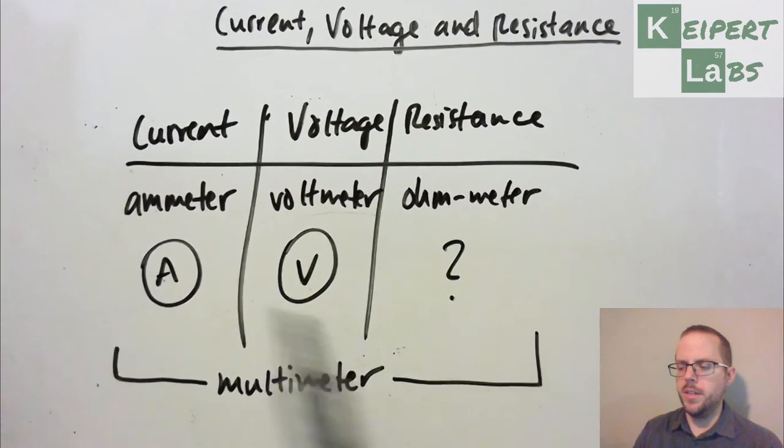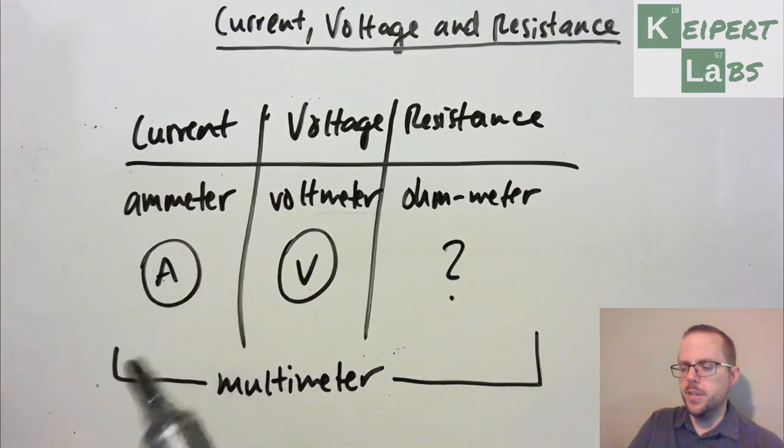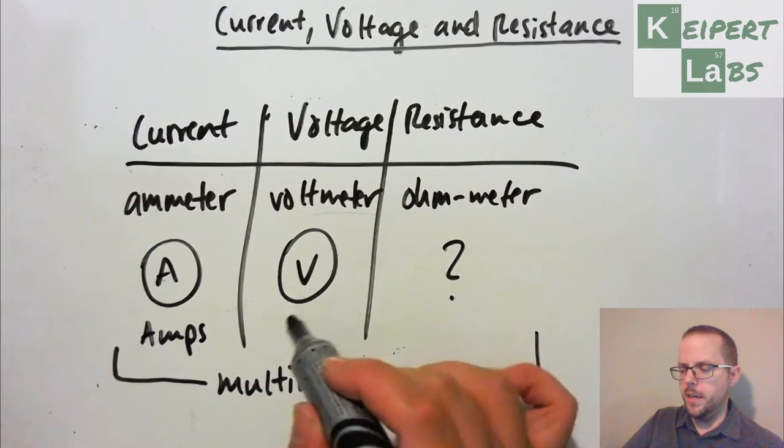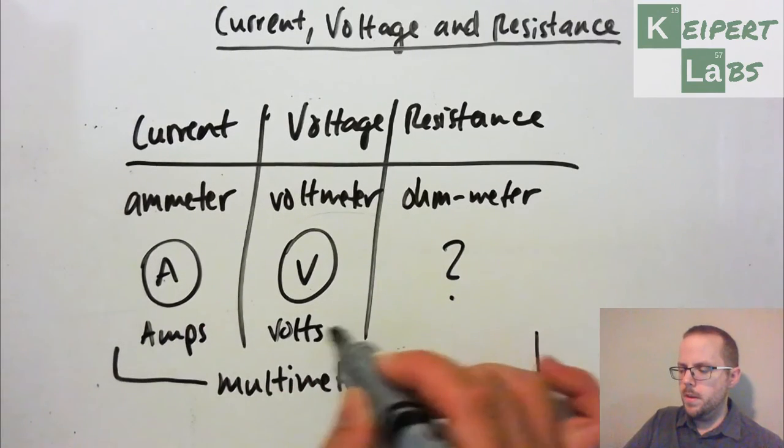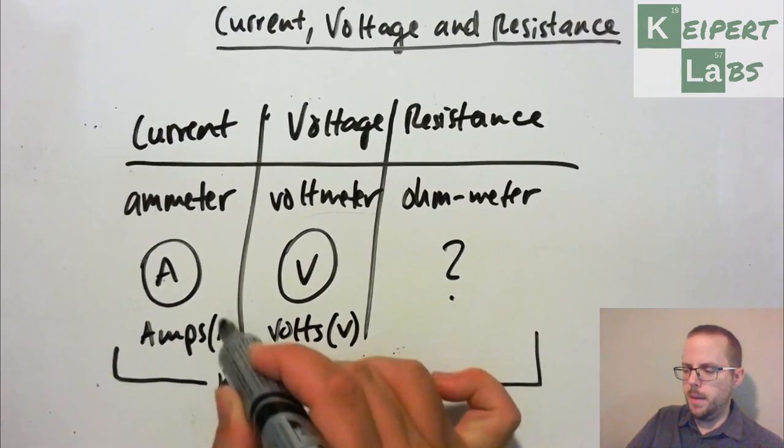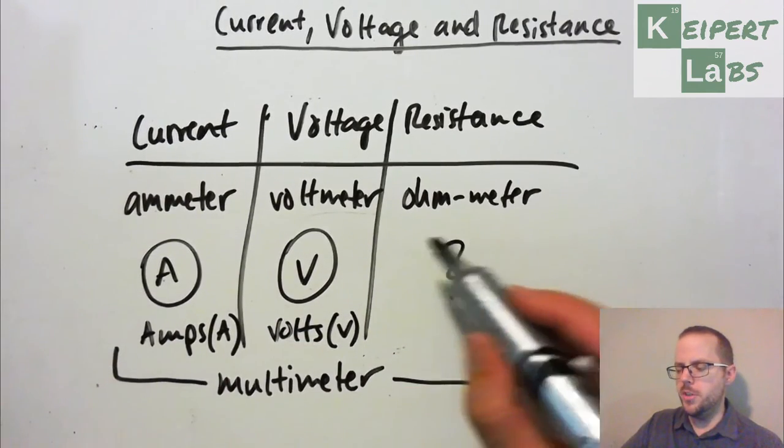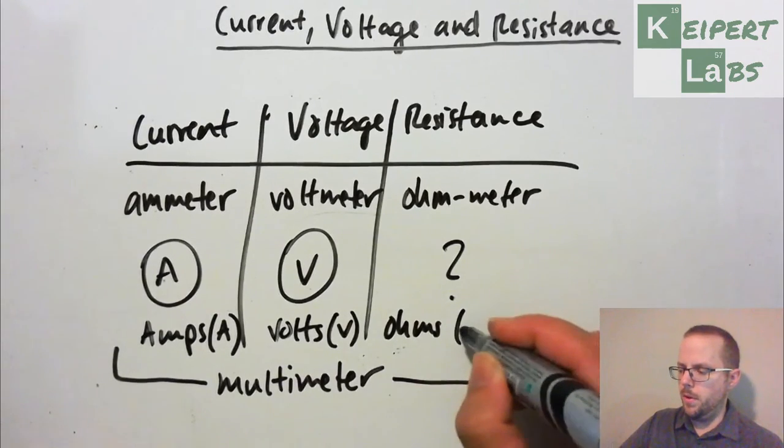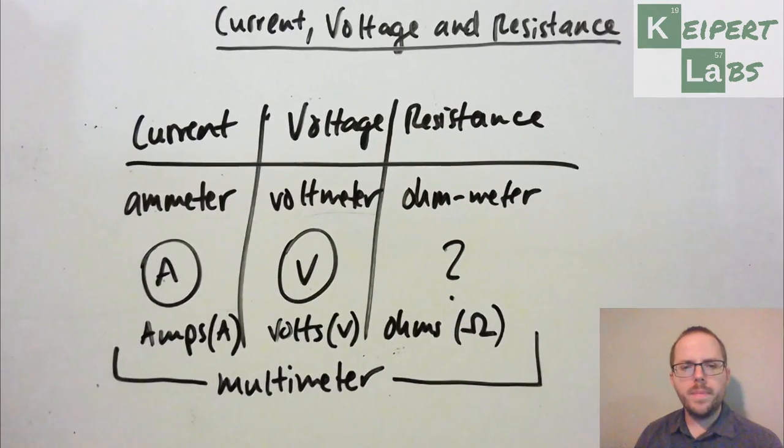So current measured with an ammeter in units of amps, voltage measured by a voltmeter in units of volts, and then resistance measured using an ohmmeter in units of ohms, which have the symbol of omega. Alright, that wraps things up. Thanks very much for watching. Bye for now.